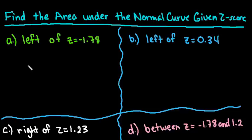Hi, for this video I want to show you how to find the area under the normal curve given a z-score.